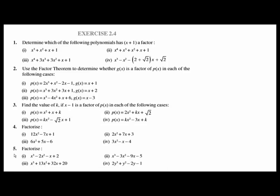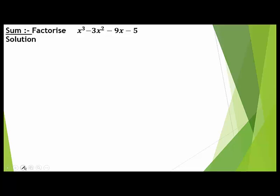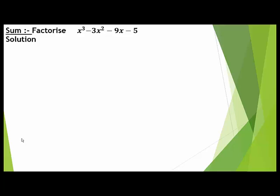Today we will discuss the fifth question of Exercise 2.4 — how to factorize a polynomial whose degree is greater than 2. For degree 2 we have two methods: splitting method and factorization method. But for degree 3, let's see what we will do. The question is: factorize x³ minus 3x² minus 9x minus 5.